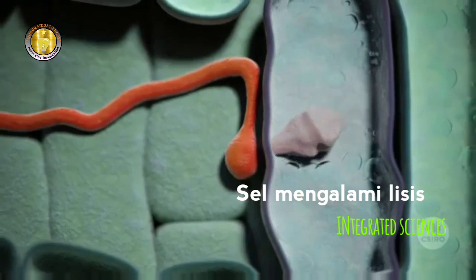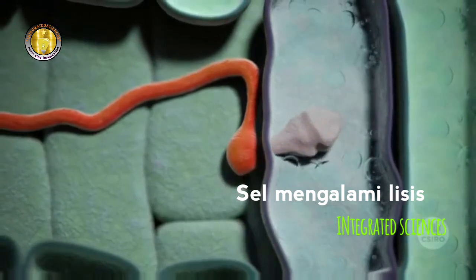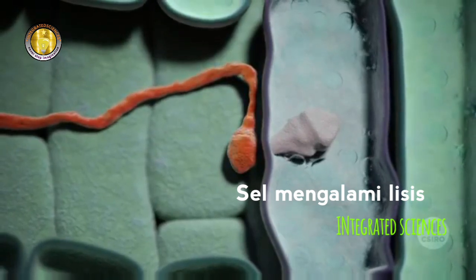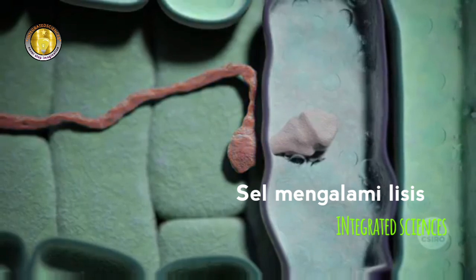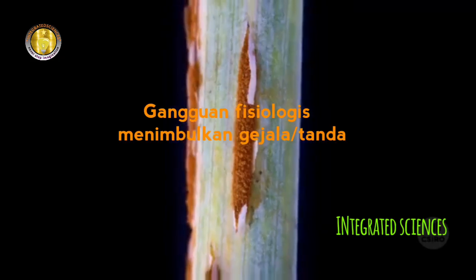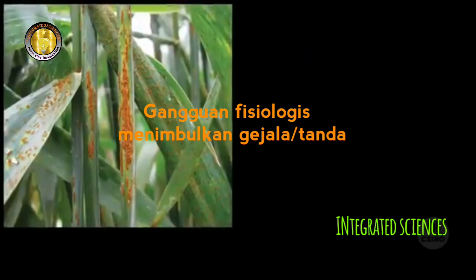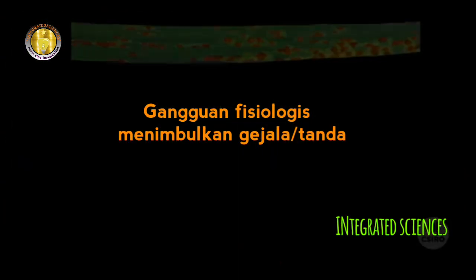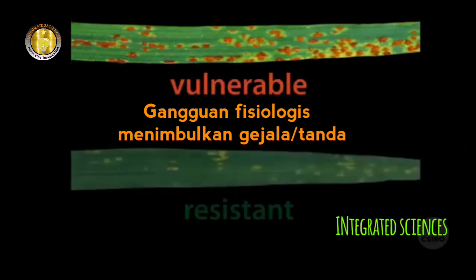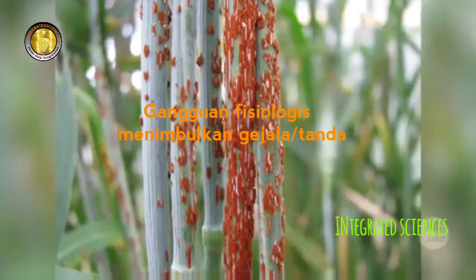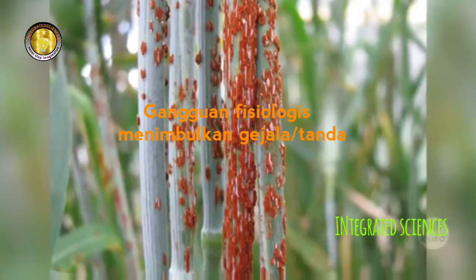The fungus will eventually starve, and the plant can continue to grow. New strains of fungi are constantly developing through evolution, and this can make some plants vulnerable to infection. Diseases like rust fungus have plagued crop production since people first began farming.